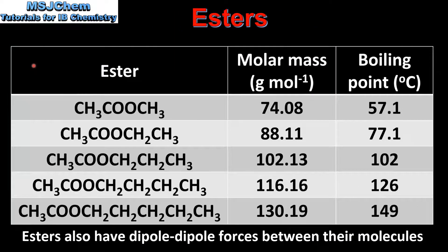To end the video we'll look at the physical properties of esters. Starting with boiling point, this table shows the relationship between the molar mass of an ester and its boiling point. Methyl ethanoate has a boiling point of approximately 57°C, and as we go down the table both molar mass and boiling point increase, with pentyl ethanoate having a boiling point of 149°C. This trend is because as molar mass increases, the strength of the London dispersion forces between molecules increases, causing the boiling point to also increase. In terms of solubility, esters get less soluble as molar mass increases, because of the increasing length of the hydrophobic hydrocarbon chains.